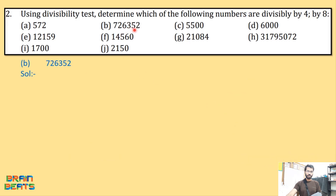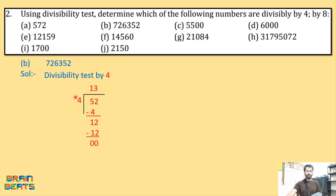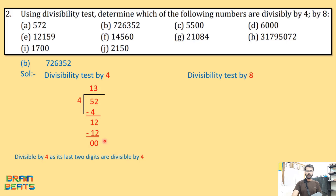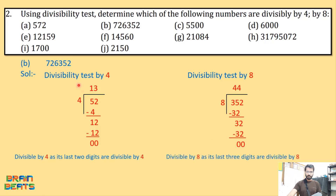Moving to question (b): 726352. To check divisibility by 4, take the last two digits: 52. Dividing 52 by 4 gives remainder 0, so yes, it is divisible by 4 — we write 'divisible by 4 as its last two digits are divisible by 4.' For divisibility by 8, take the last three digits: 352. Checking 352 — it is also divisible by 8. So 726352 is divisible by 8 as its last three digits are divisible by 8.